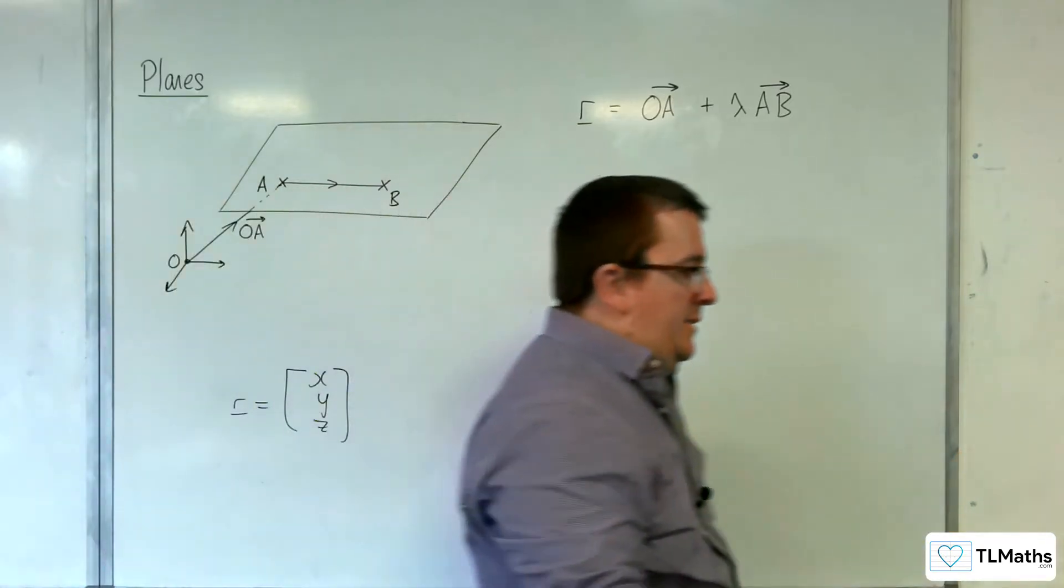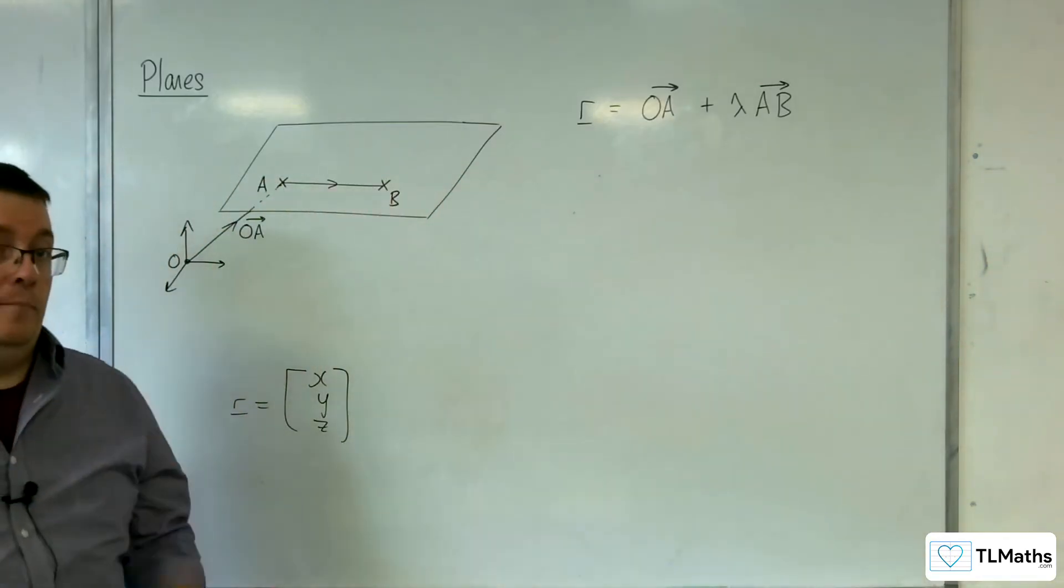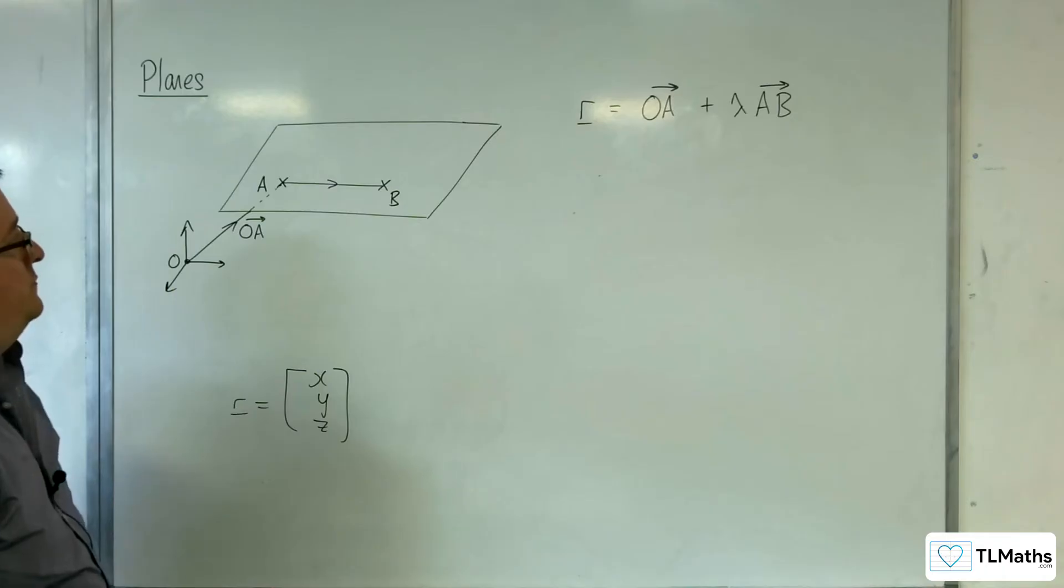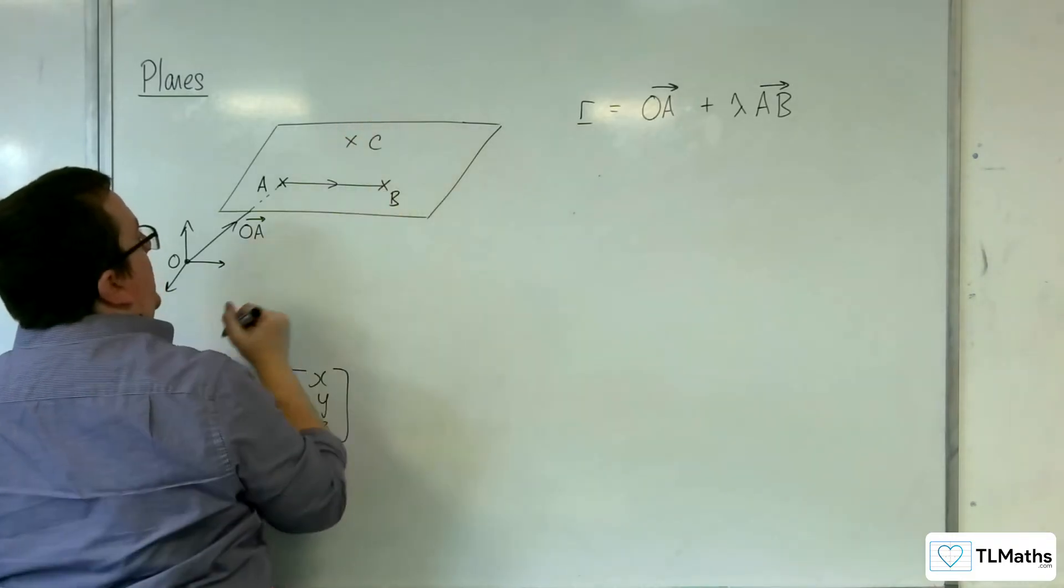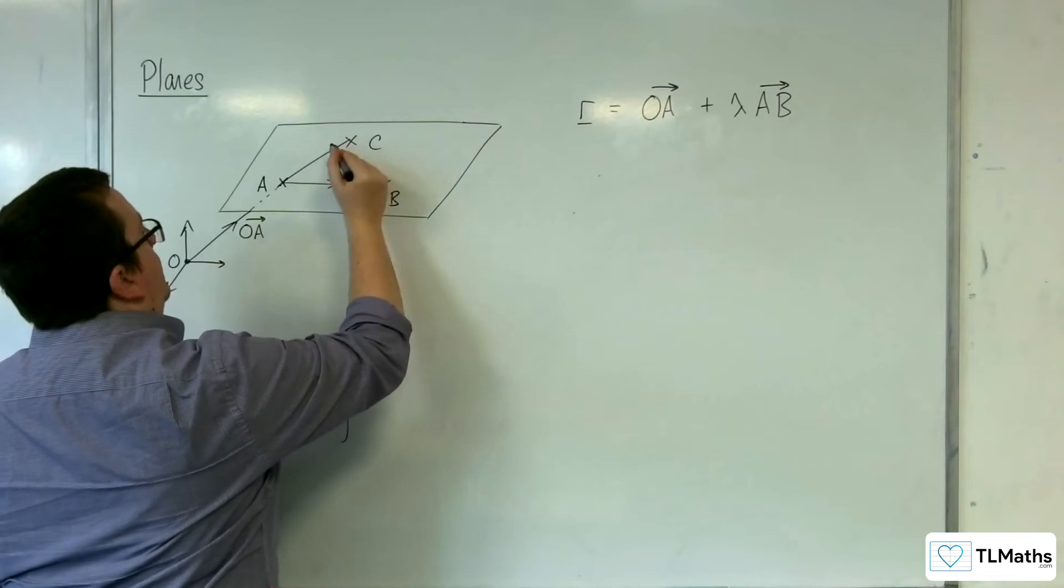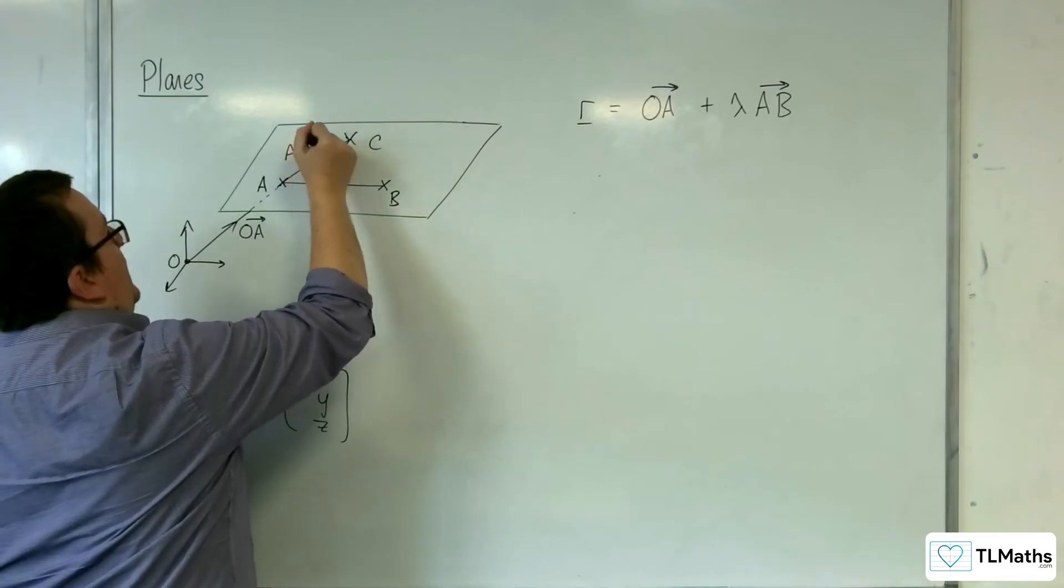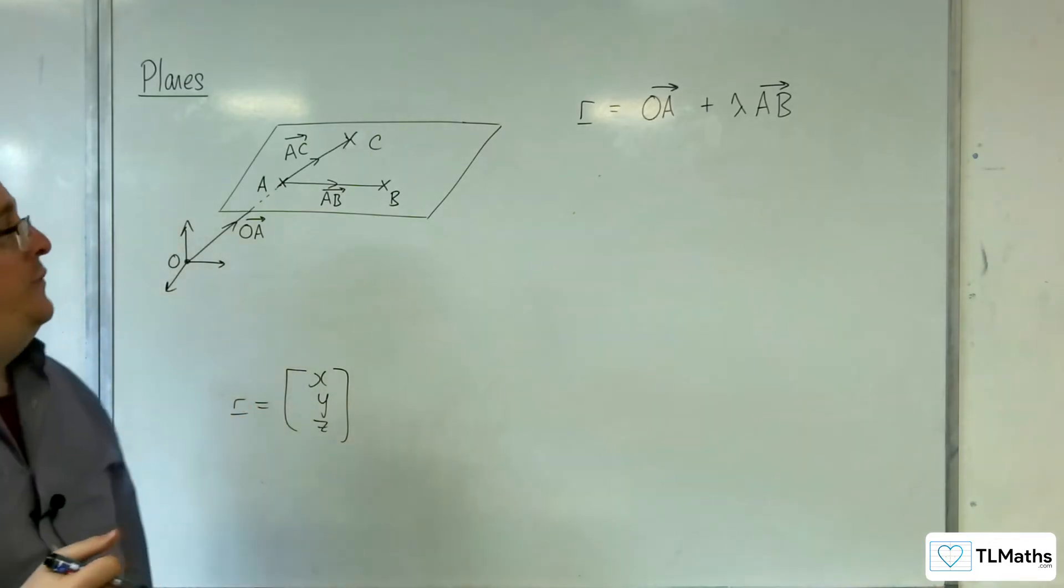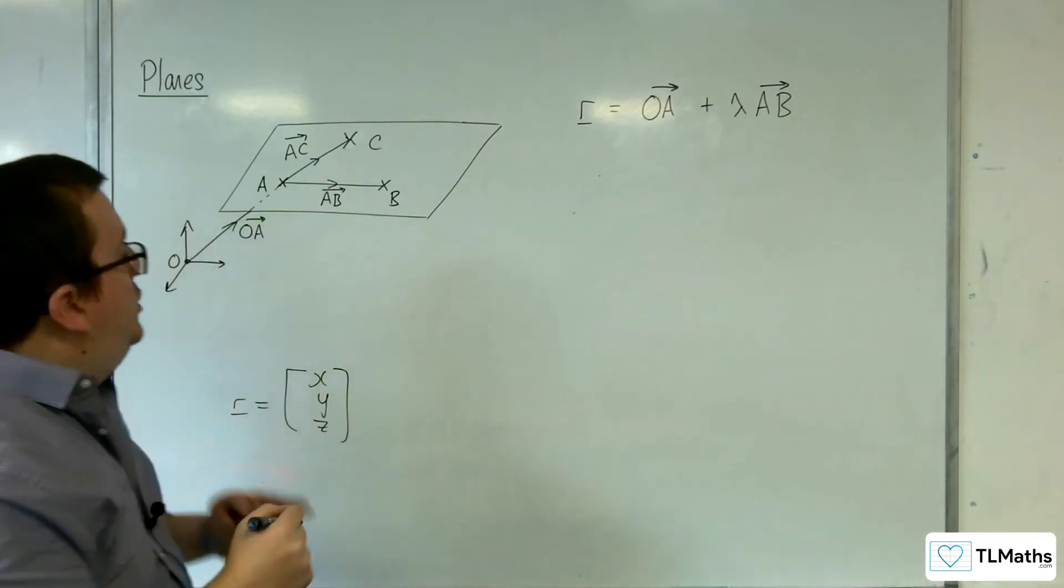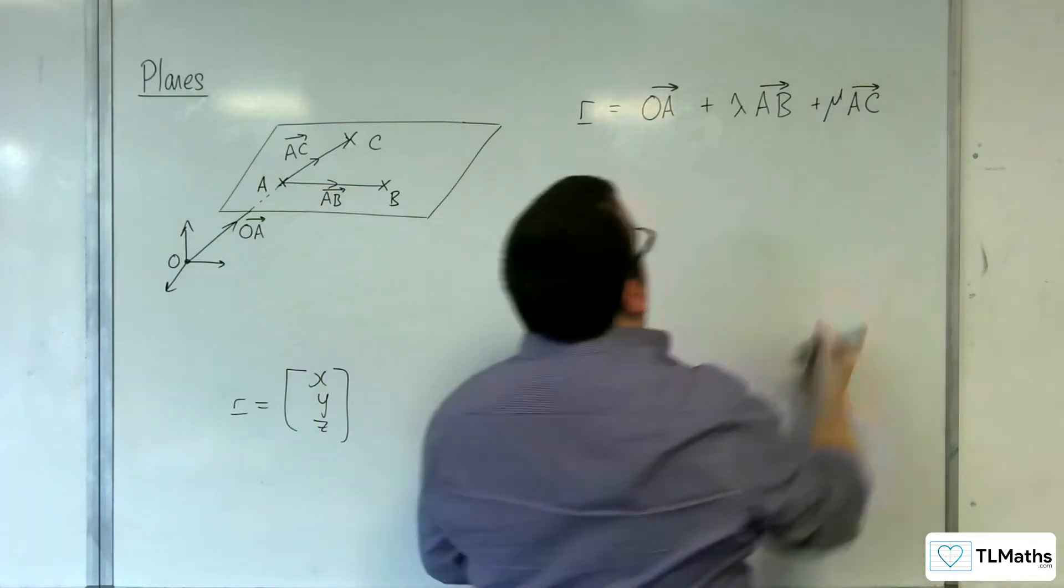So what I need is another direction vector that isn't parallel to AB. So I just need another point. So if I could find another point on the plane, let's call that C, and then I could work out the vector AC. I could work out the vector AC and then I could use multiples of that to get to any point that's on the plane.